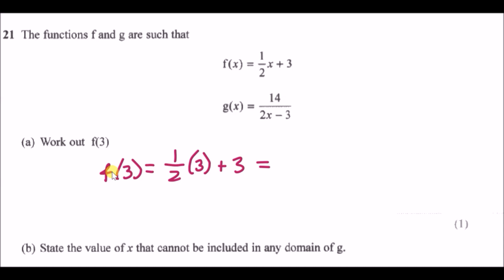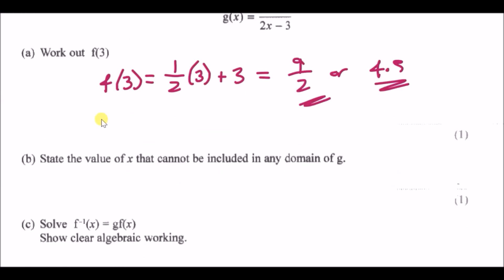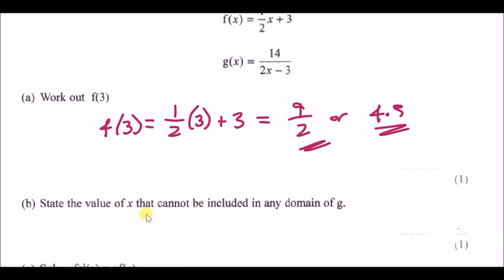Put that in your calculator and you should get 9 over 2, or 4.5. That's it. For part b, state the value of x that cannot be included in any domain of g.